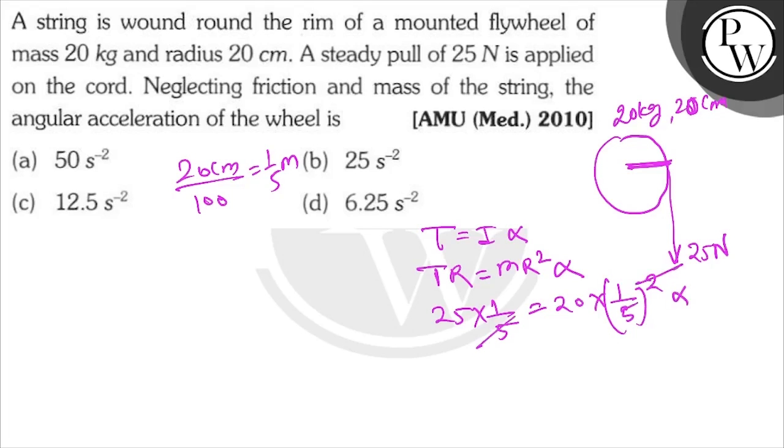This simplifies to 125 upon 20, and that is equal to alpha. So 6.25 radians per second squared is your alpha. All the best!